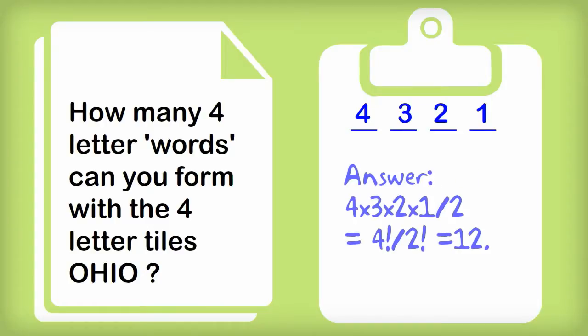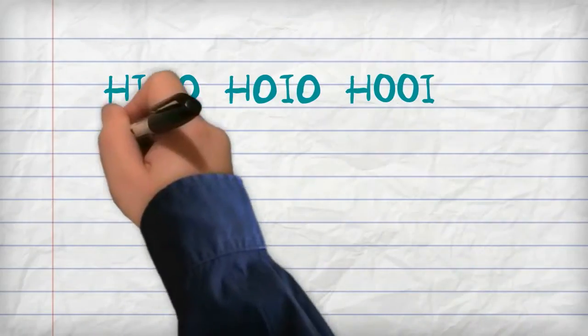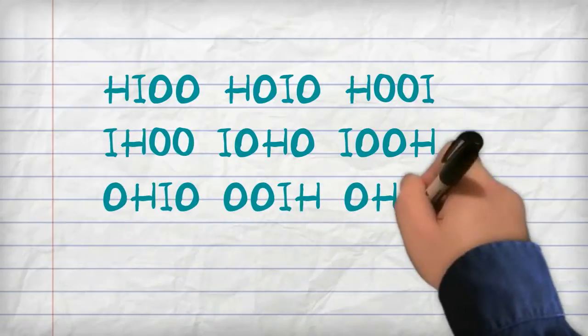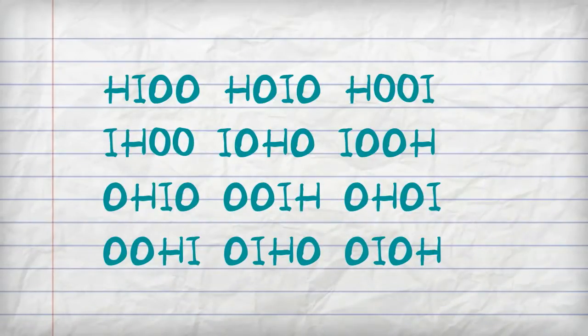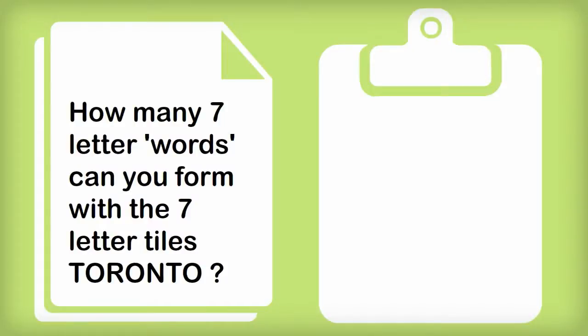So the answer is four by three by two by one on two. Or we would write it otherwise as four factorial on two factorial equals twelve. And just in case you're not sure, here's a scrap of paper and I'll write out the twelve words that we can get from the letters O, H, I, O.